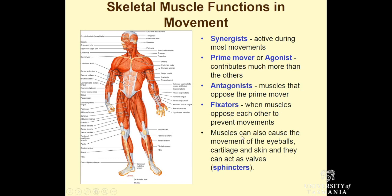Lastly, we have muscles which can cause movement of the eyeballs, cartilage, and skin, and they can act as sphincters. For example, we have skeletal muscle around the mouth and the eyes — orbicularis oculi and orbicularis oris — these are sphincter muscles.